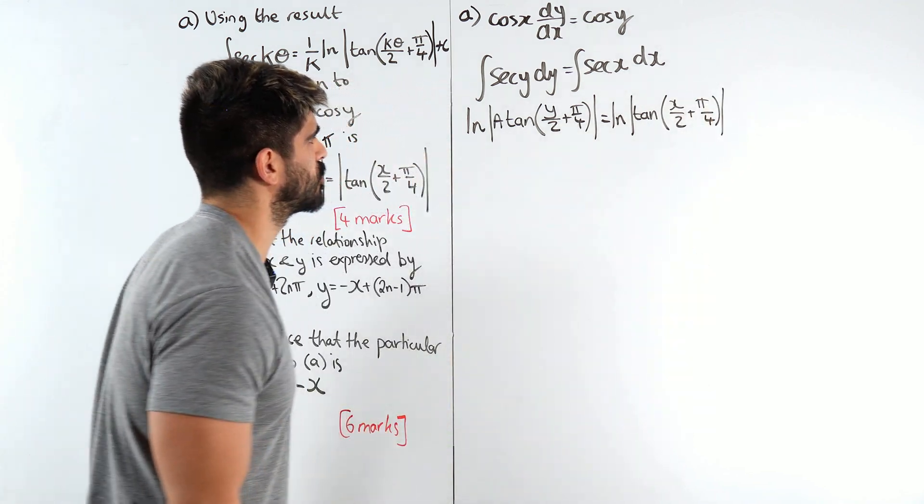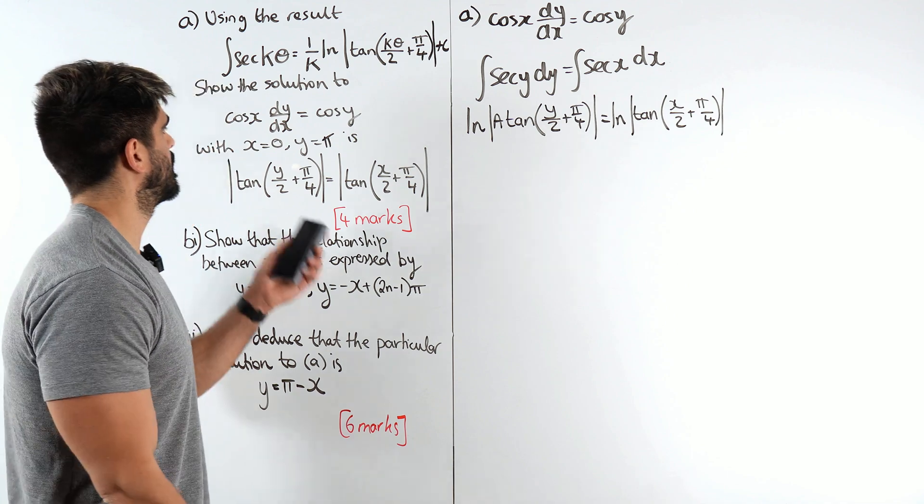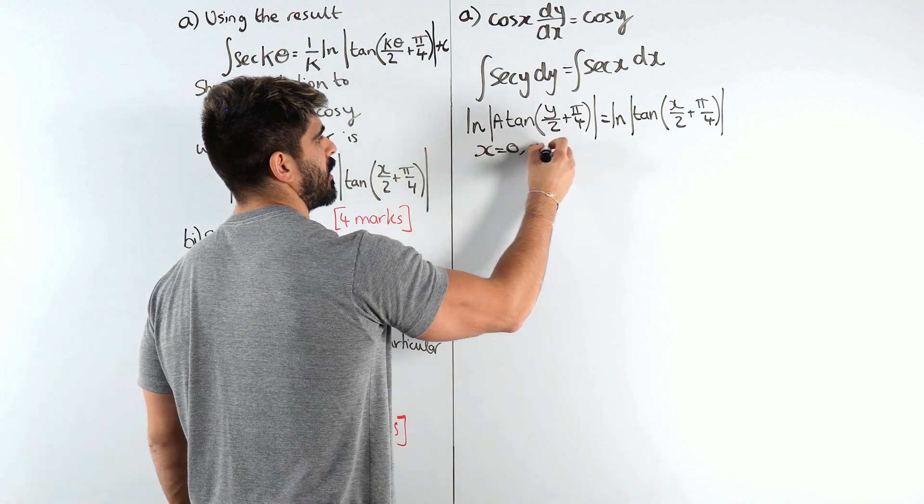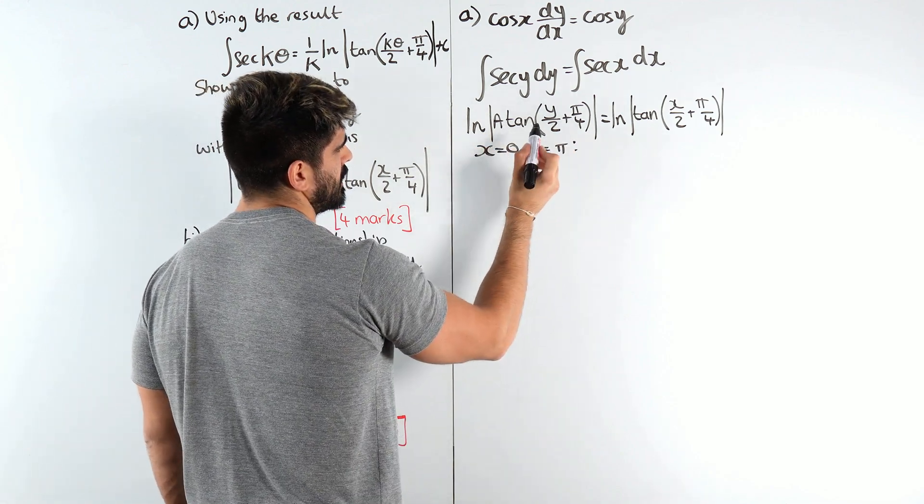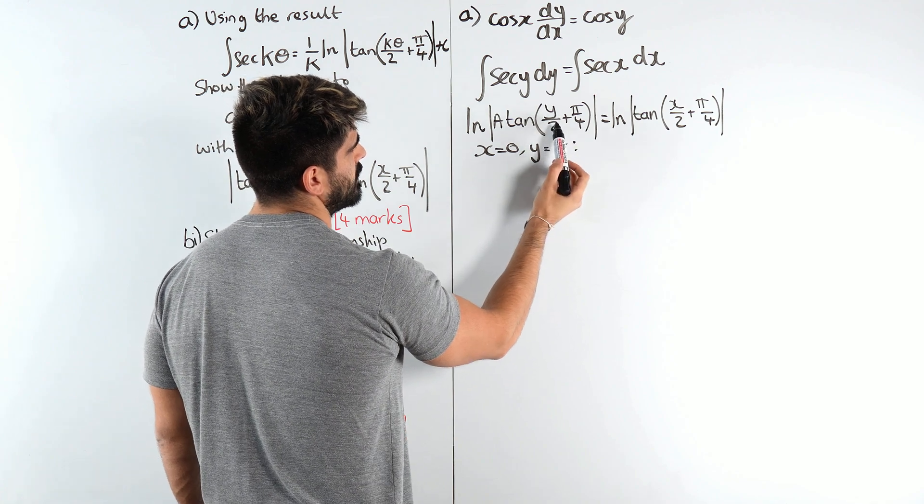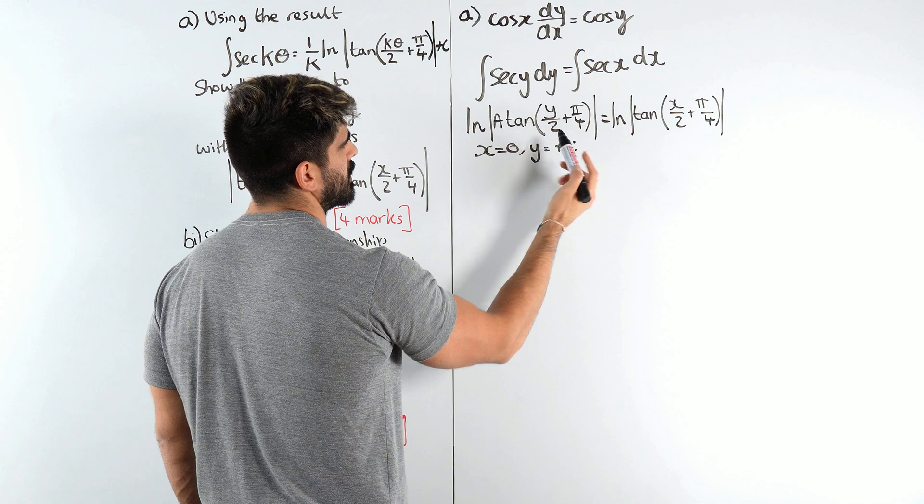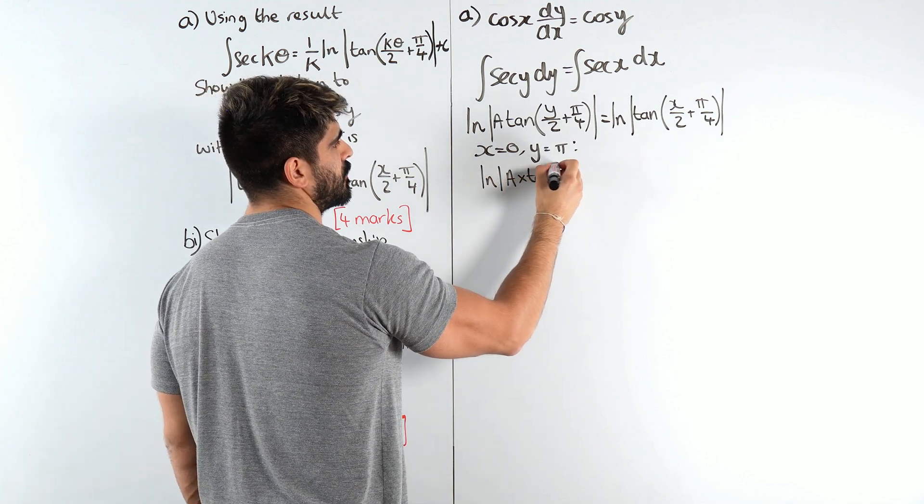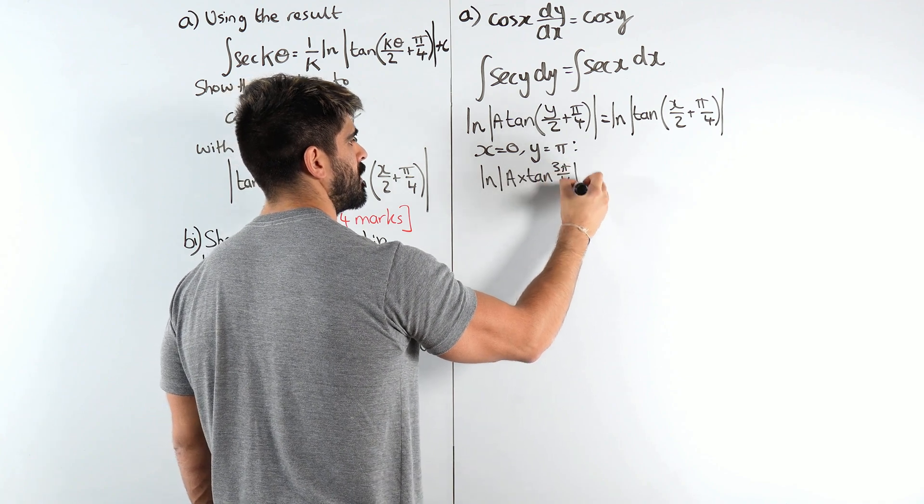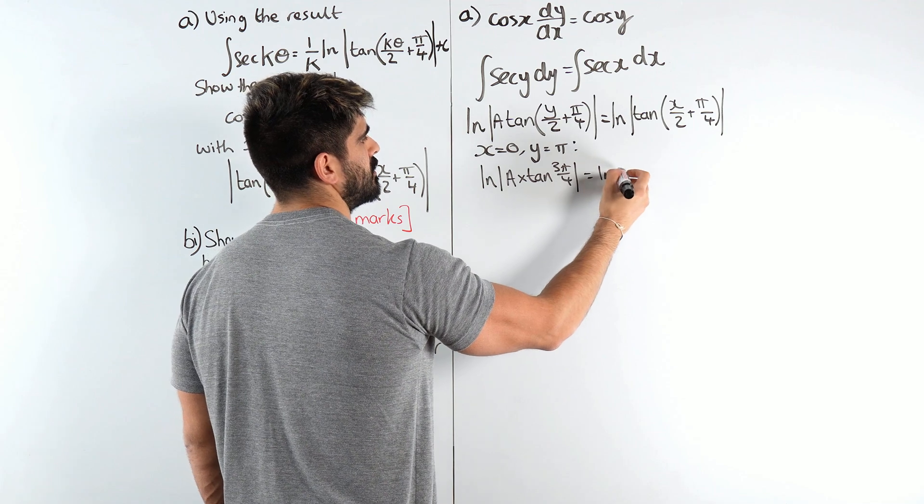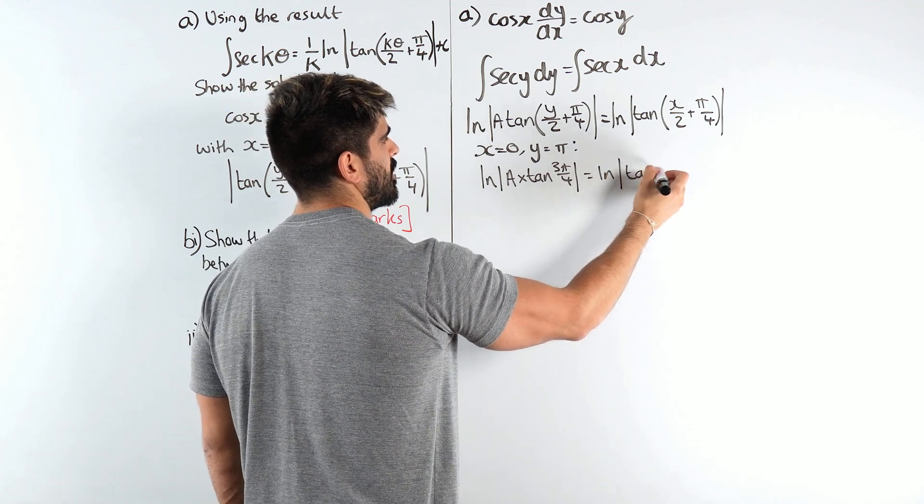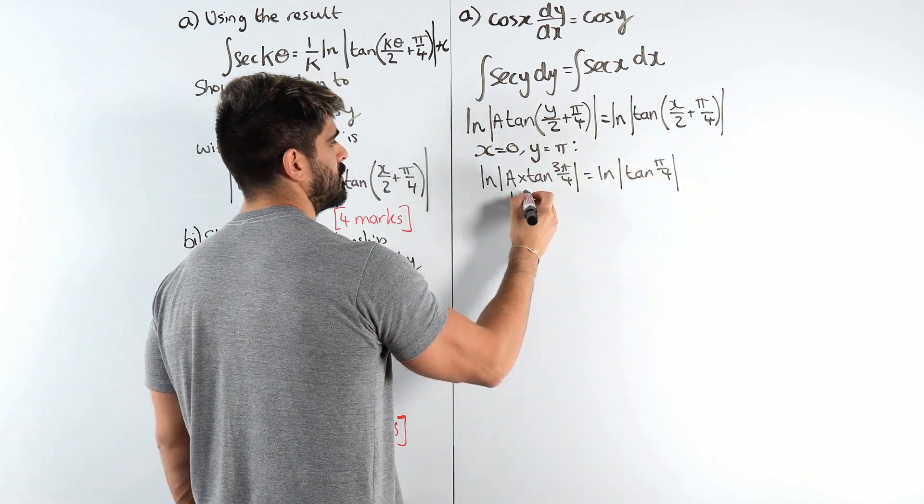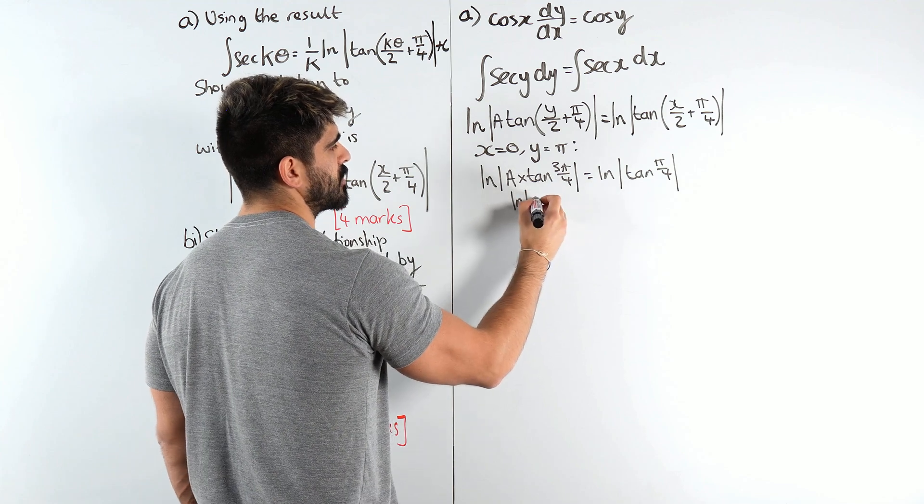Now we need to do our substitutions to find our constant of integration. When x is 0, y is pi. What do we get? When y is pi we're gonna get pi over 2 plus pi over 4. So we get ln of a times tan of 3 pi over 4 equals ln of tan of pi over 4. Now here x is 0 so we just get pi over 4. So we get tan of 3 pi over 4 is minus 1.